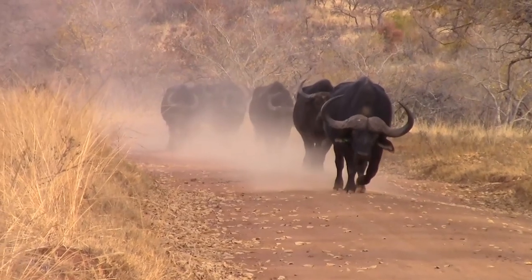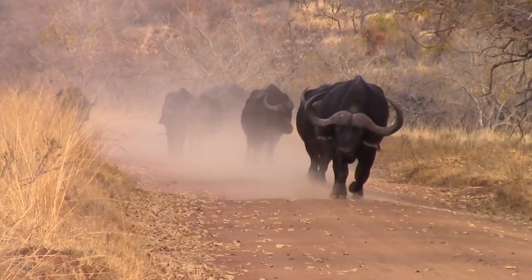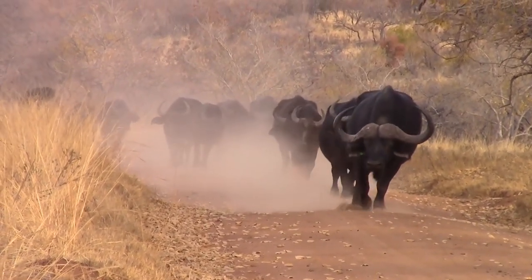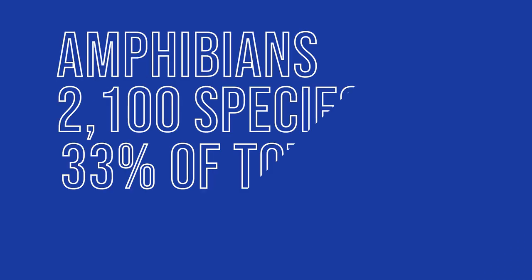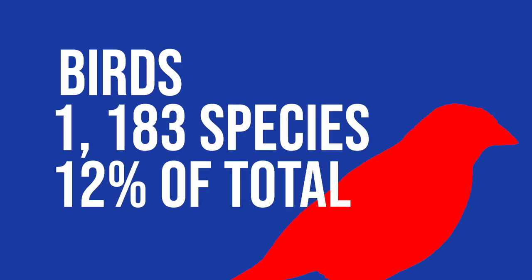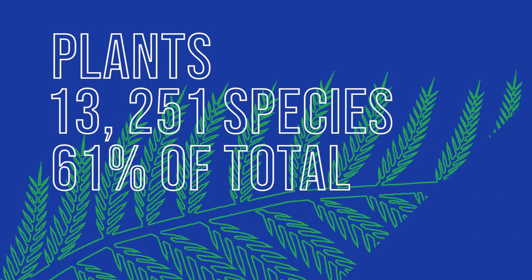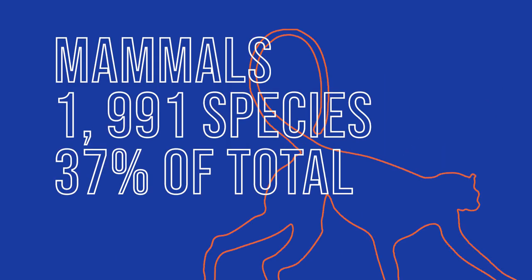All three of these combine to make an increasingly deadly combination, with as many as 30–50% of all species possibly heading towards extinction in the next 40 years. 2,100 species of amphibians, 1,183 species of birds, 1,851 species of fish, 13,251 species of plants, and 1,999 species of mammals across the globe are categorized as threatened or worse. 99% of those species are at risk because of human activities.